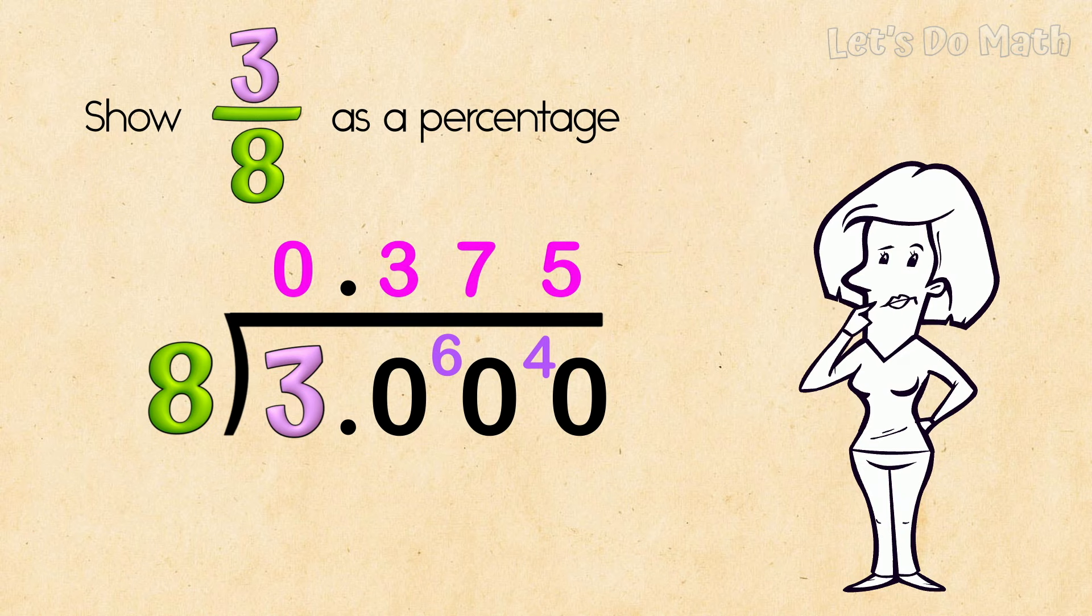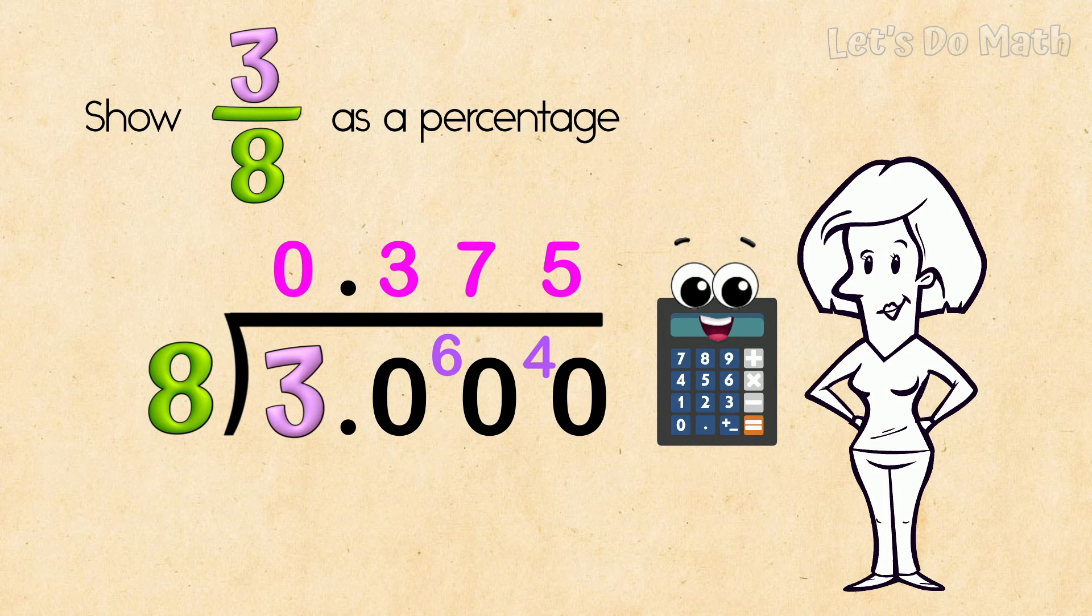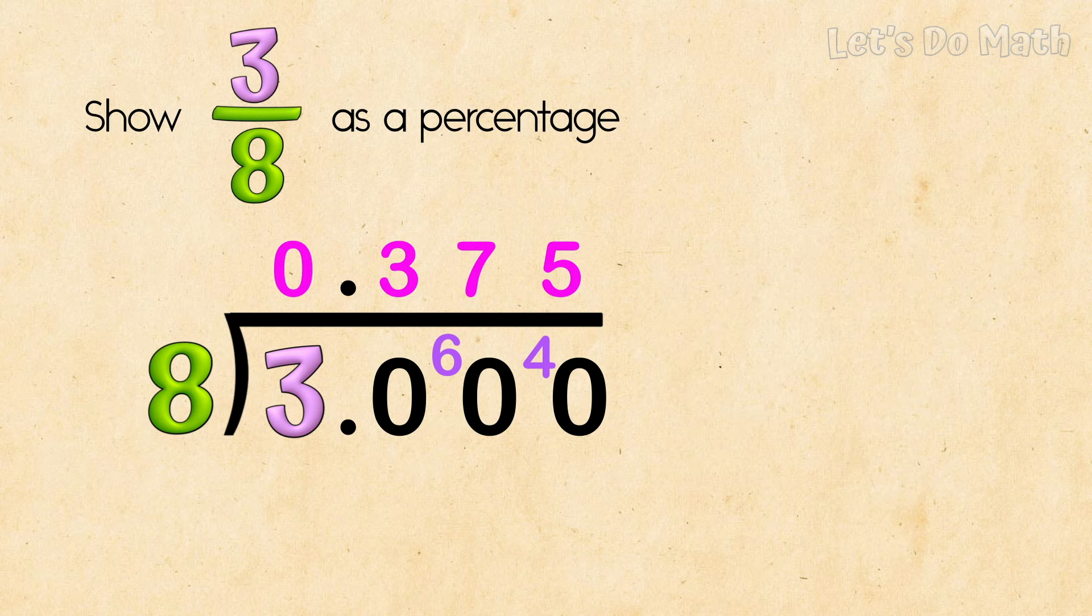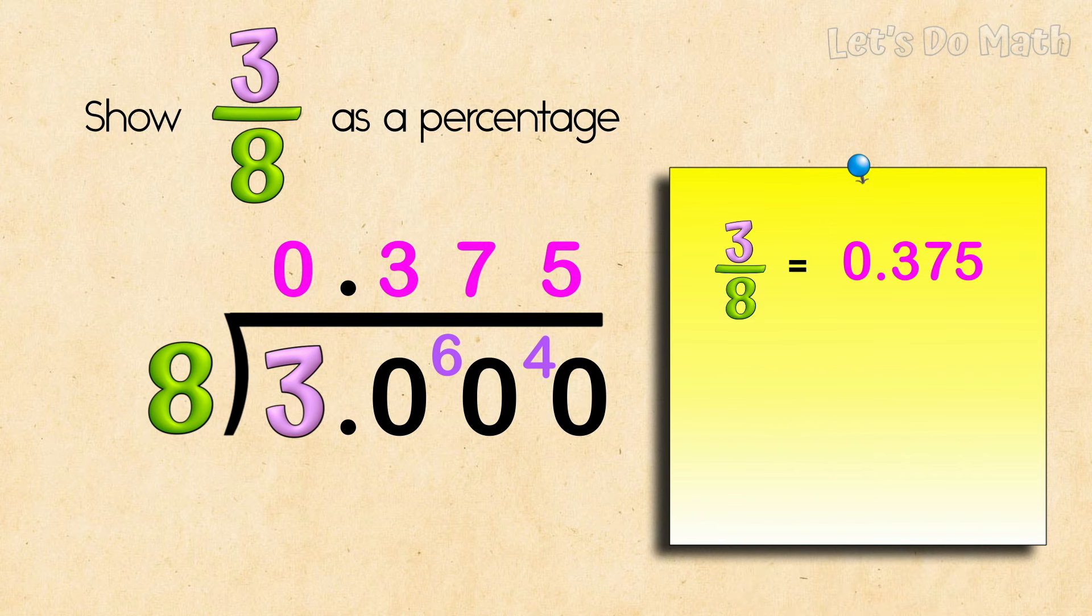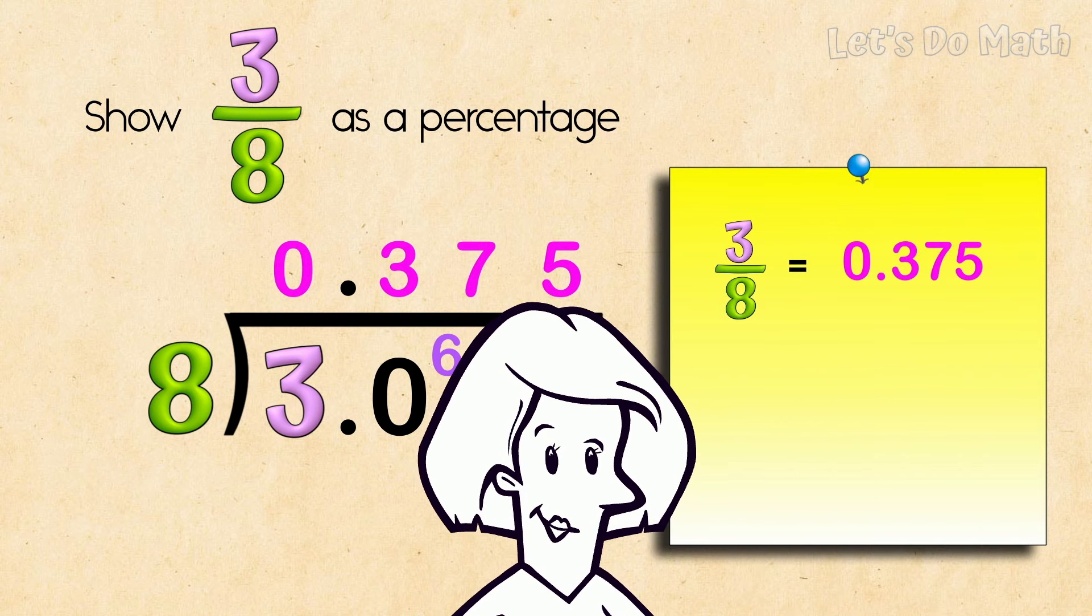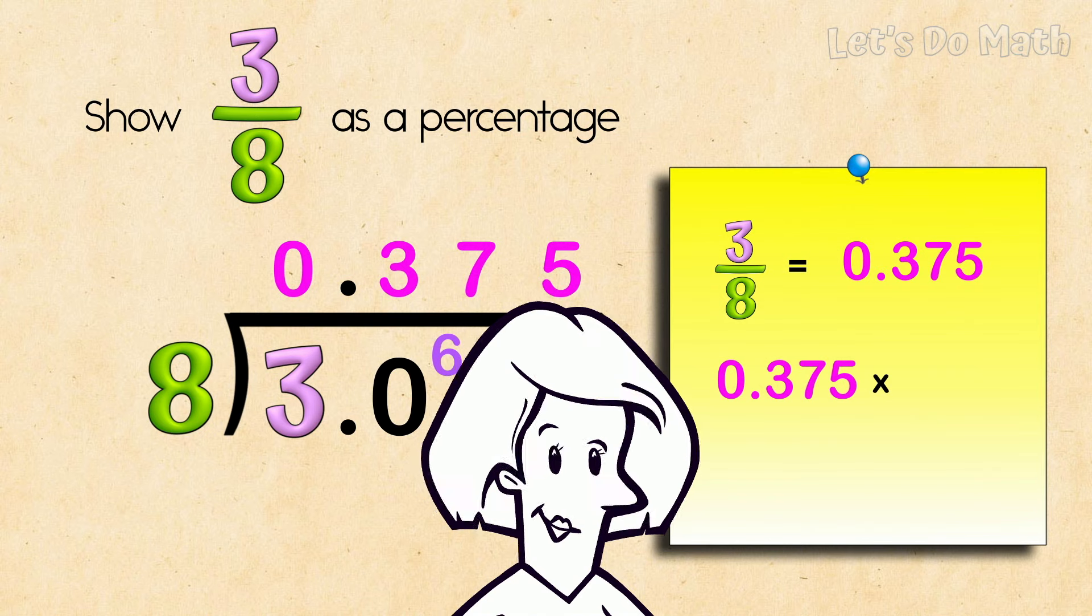And of course, if you're allowed a calculator, that just makes things faster! So now we've got a decimal value, we make a percentage from that. We just multiply it by 100.